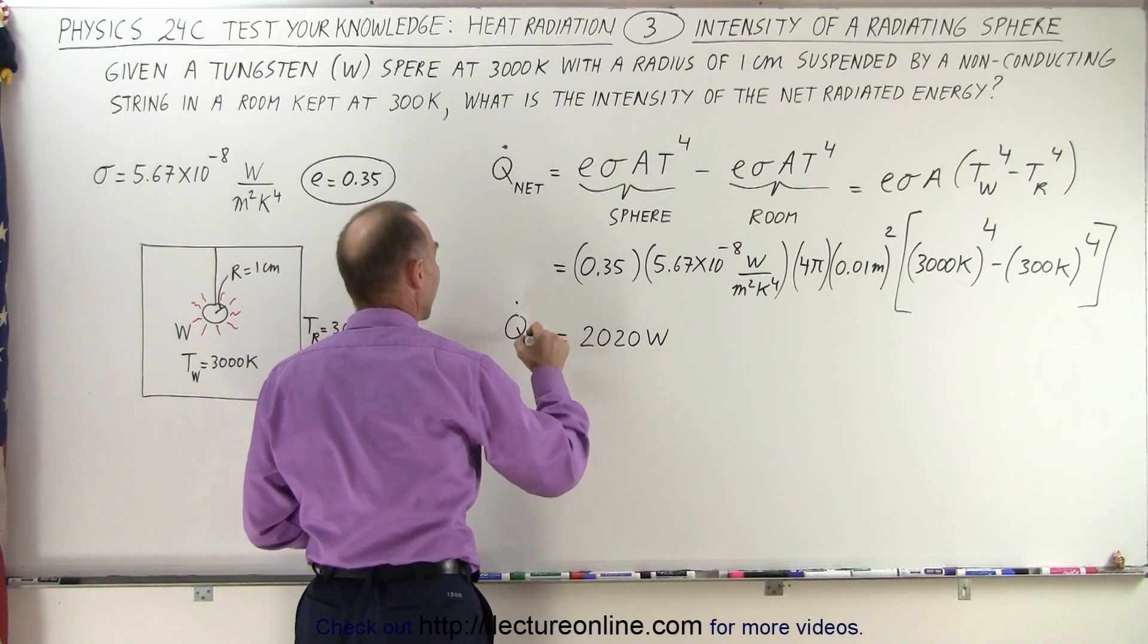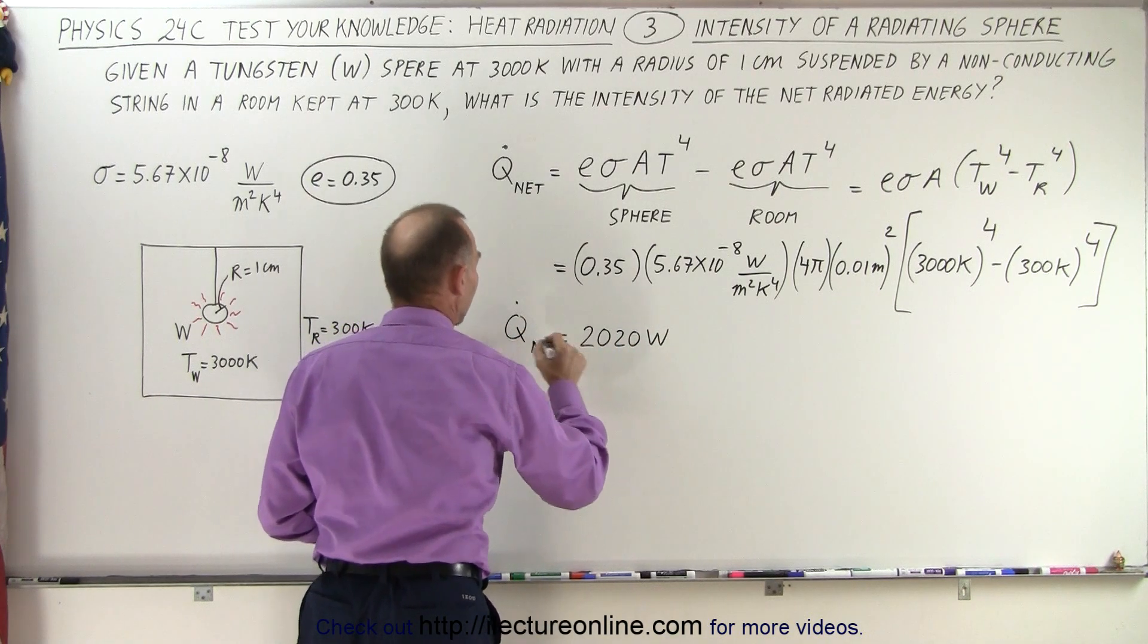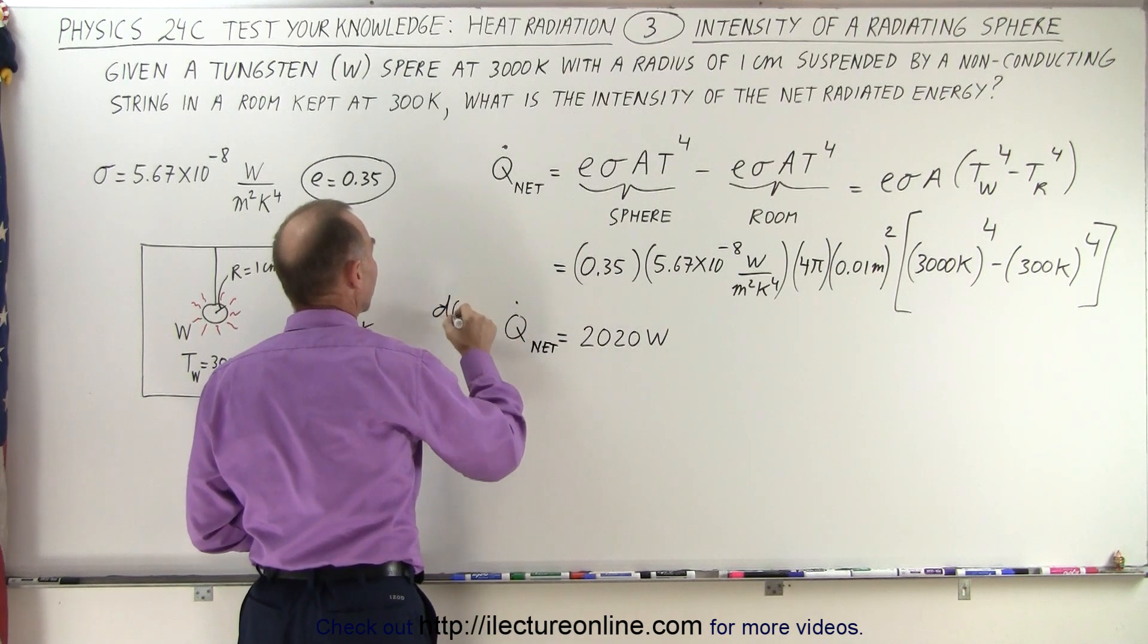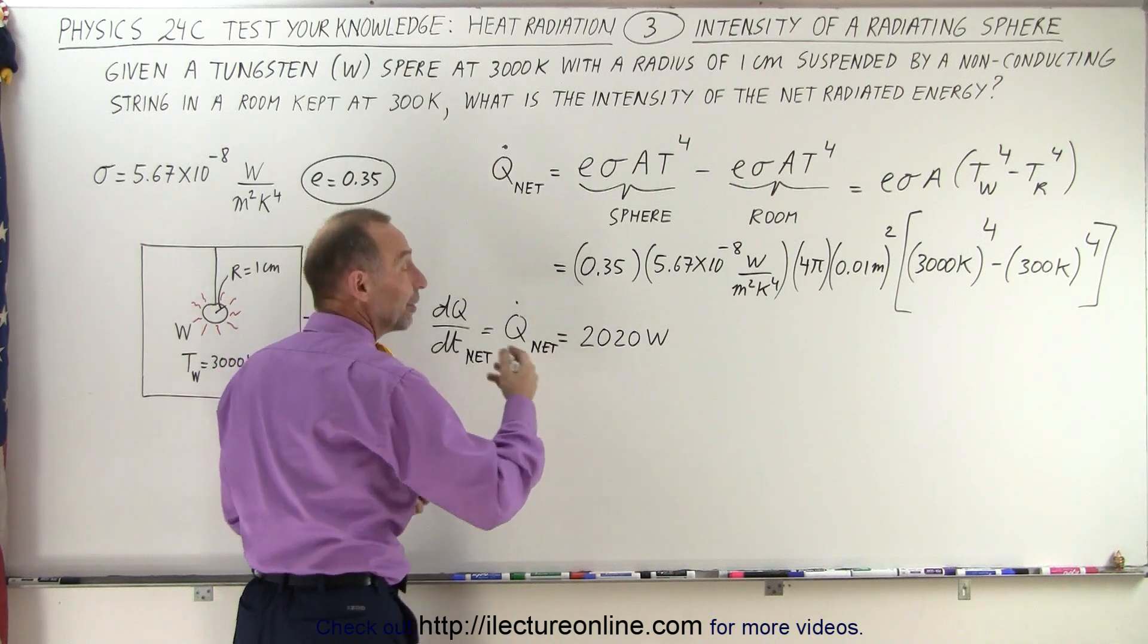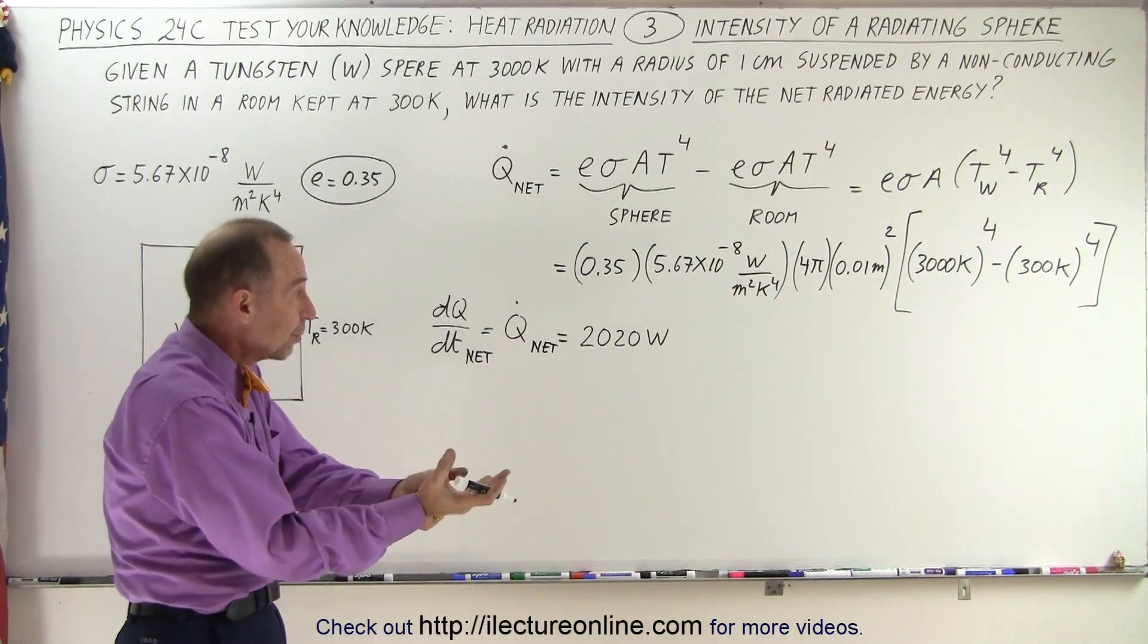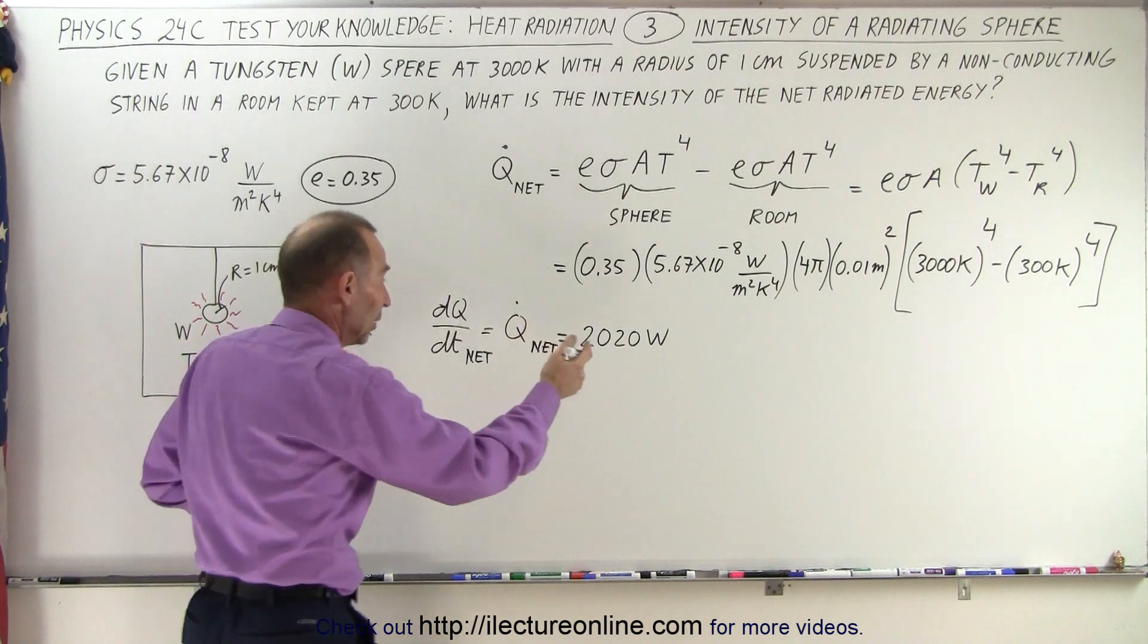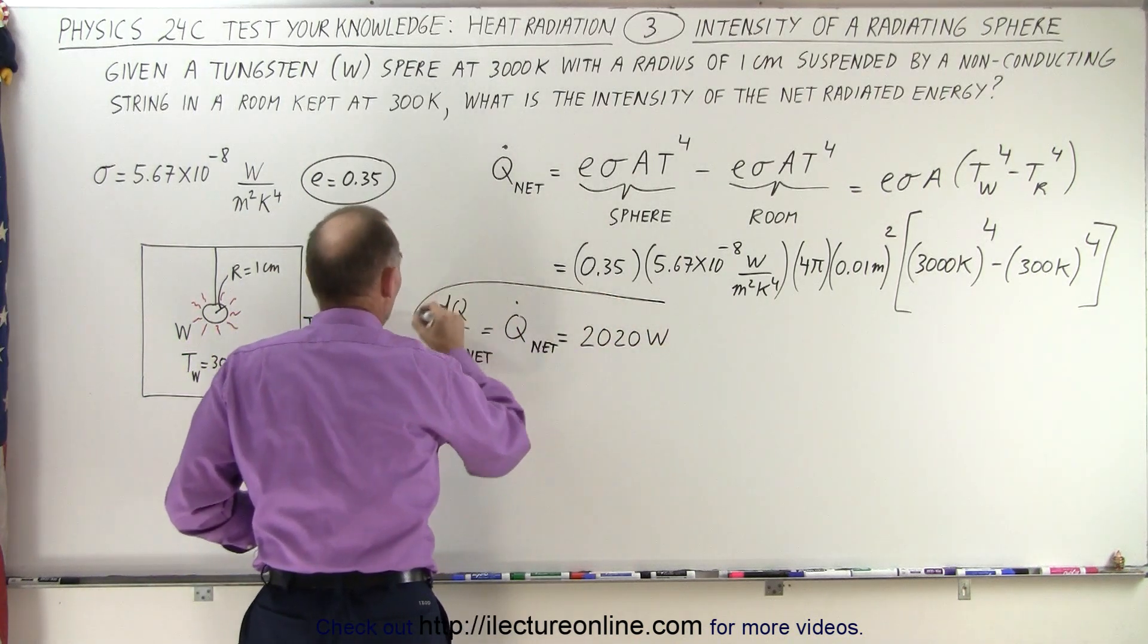So, that's Q dot net, and of course, remember that Q dot is equal to the amount of heat per unit time that's being radiated from the sphere minus the amount of heat that's being received back from the sphere, which, again, will be a very small, insignificant portion.